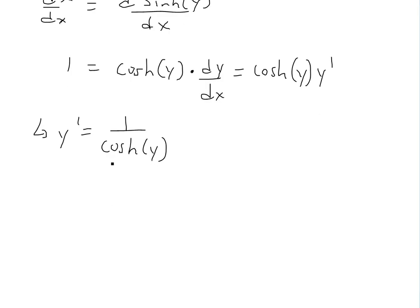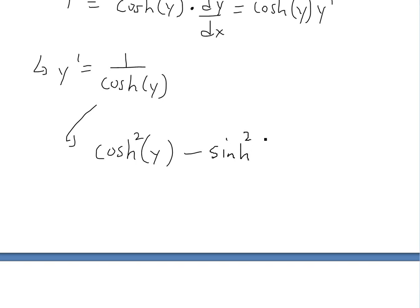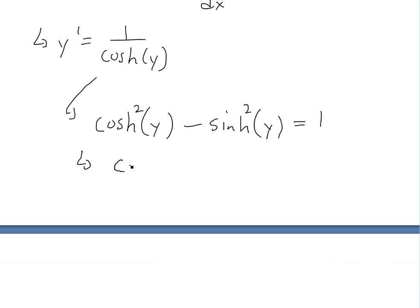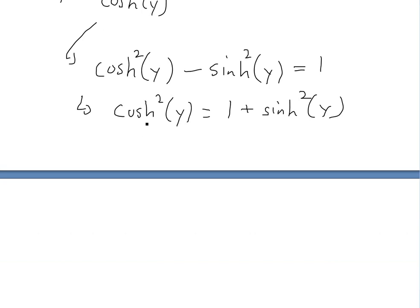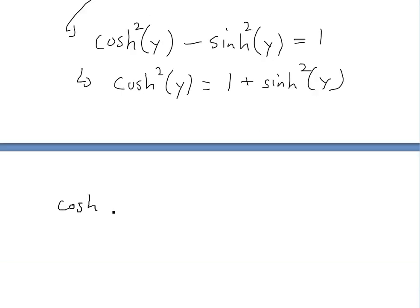To write this in terms of x, we use the hyperbolic identity from an earlier video: hyperbolic cosine squared of y minus hyperbolic sine squared of y equals 1. Using this property, we solve for hyperbolic cosine of y: hyperbolic cosine squared of y equals 1 plus hyperbolic sine squared of y. Taking the square root of both sides gives hyperbolic cosine of y equals plus or minus the square root of 1 plus hyperbolic sine squared of y.